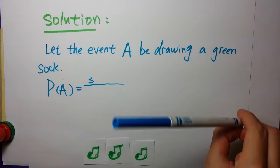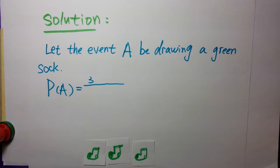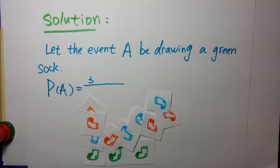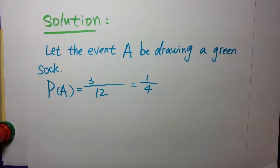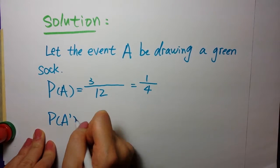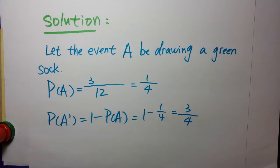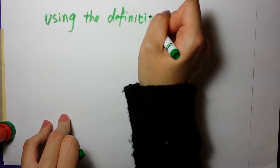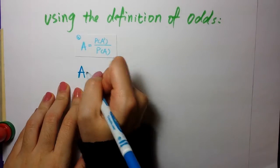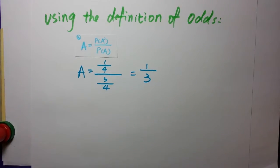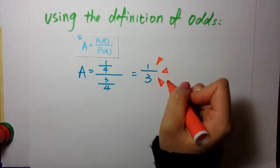There are three green socks, and the total number is 12. So the probability of A is 1 over 4. The probability of not drawing a green sock is 3 over 4. Using the definition of odds, odds in favor of A equal P(A) over P(A complement). So the probability is 1 over 3.